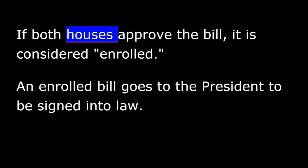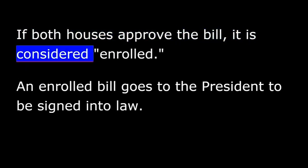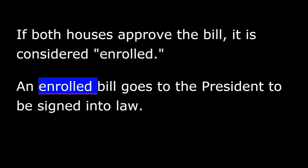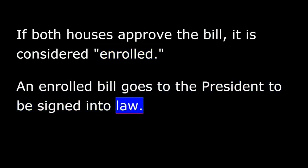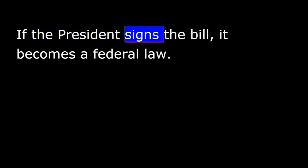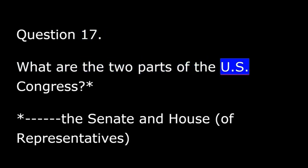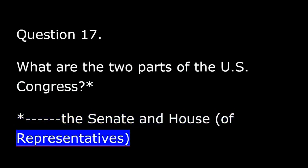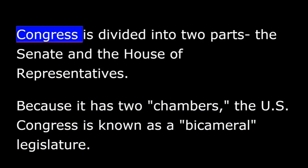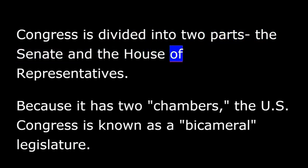If both houses approve the bill, it is considered enrolled. An enrolled bill goes to the President to be signed into law. If the President signs the bill, it becomes a federal law. What are the two parts of the U.S. Congress? The Senate and House of Representatives. Congress is divided into two parts: the Senate and House of Representatives.